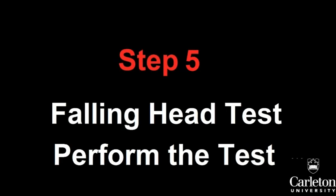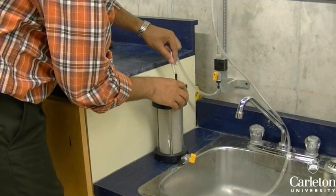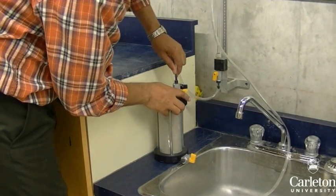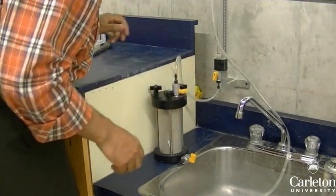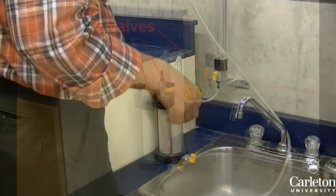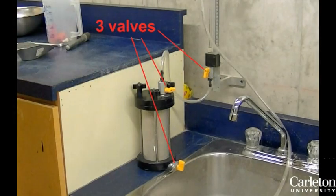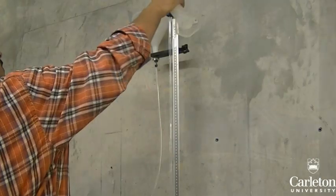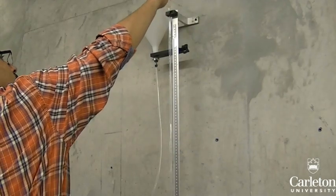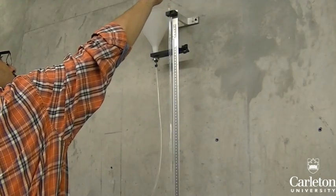The cylinder for the falling head test consists of just one line connected to the test cylinder. Connect the line to the cylinder. Before we can start the test, we must saturate the soil with water. There are three valves in the system. Make sure they are all open. Start adding water to the top of the stand pipe. A larger funnel can help you do this more easily.